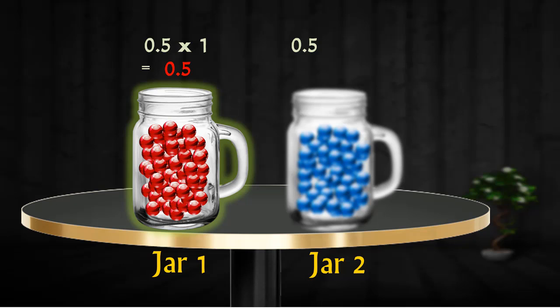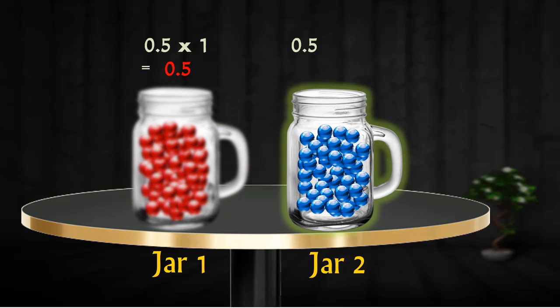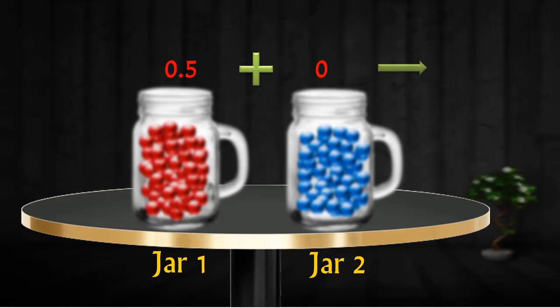And if you select jar 2 at random then in this case you have 0% chances of drawing a red marble. Adding up these two probabilities gives us 0.5. That's 50% chances of drawing a red marble.